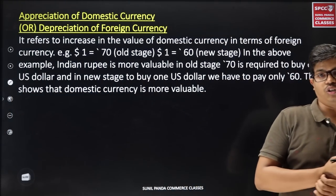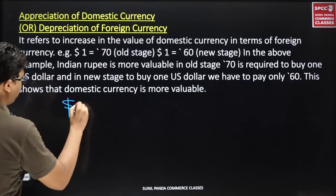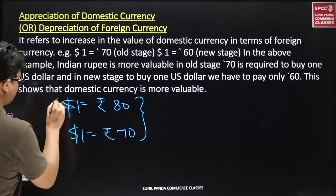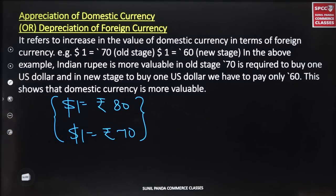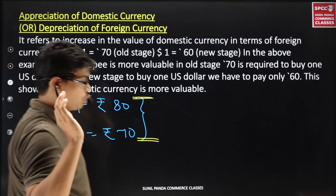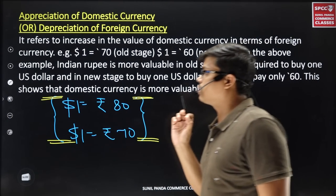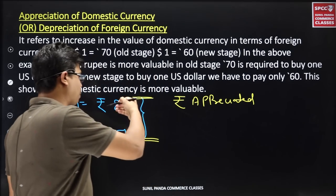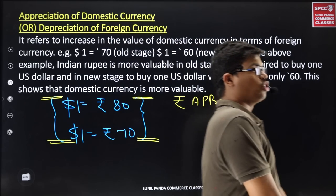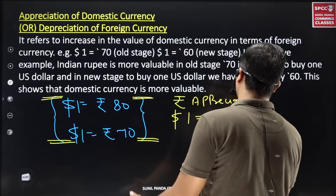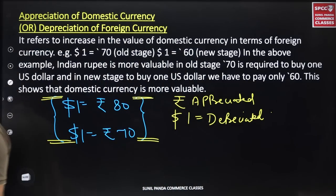Now the opposite — appreciation of domestic currency. If one dollar was 80 rupees and now one dollar is only 70 rupees, the rupee is more powerful. Earlier 80 rupees were needed for one dollar, today only 70 rupees are enough. So the rupee has appreciated and the dollar has depreciated — the dollar is worth less. This is called appreciation of domestic currency.